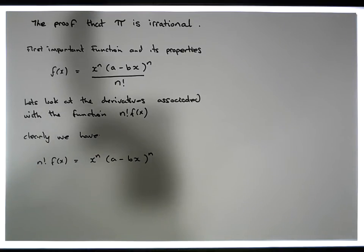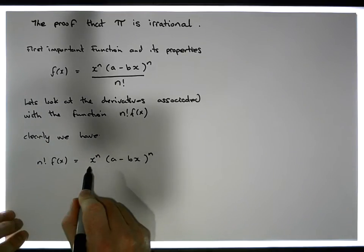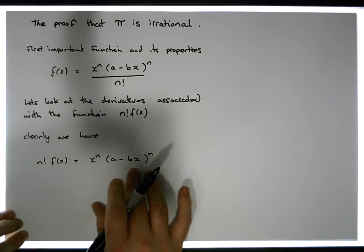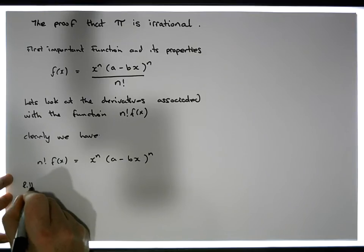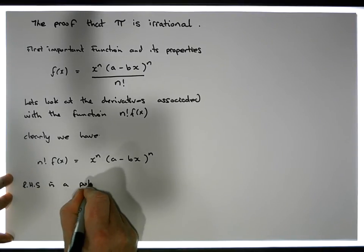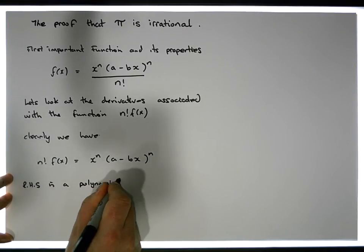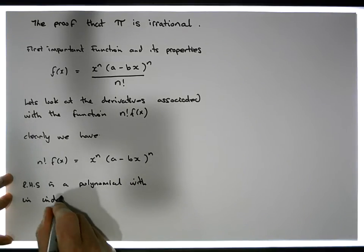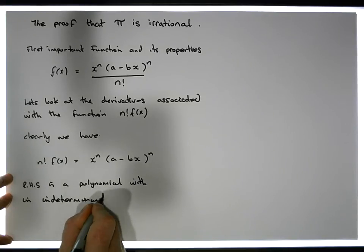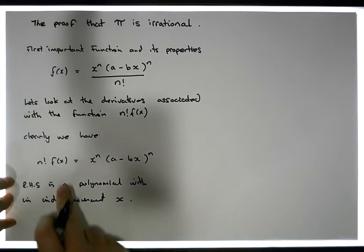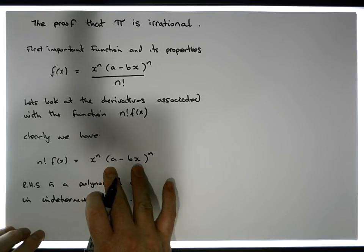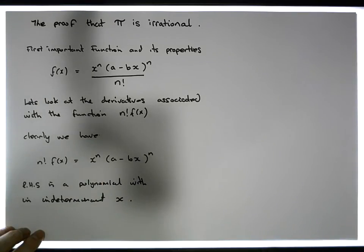Let's have a look at the right-hand side of this equation. The right-hand side is a polynomial with indeterminate x. So it is a polynomial, and what I'm going to do is expand out this particular polynomial. We could use the binomial theorem to expand it, but I'm just going to talk about its expansion.